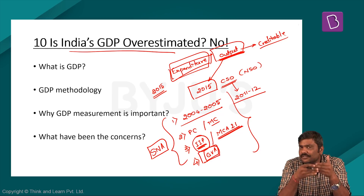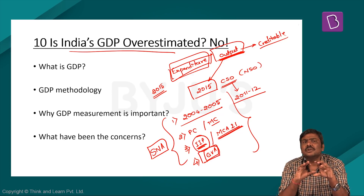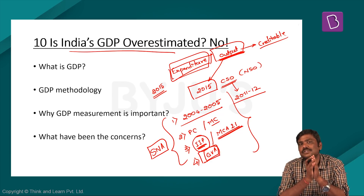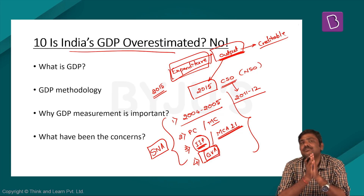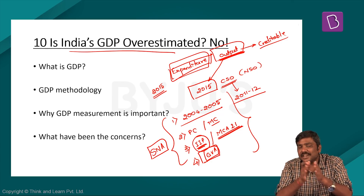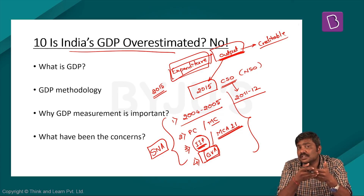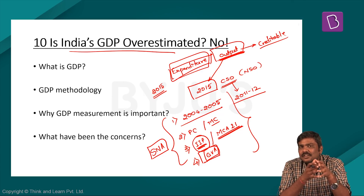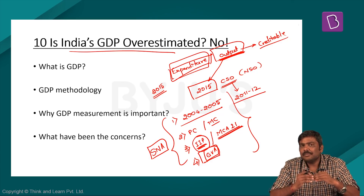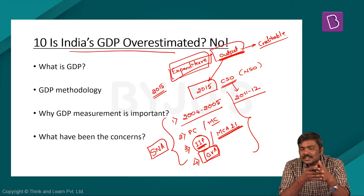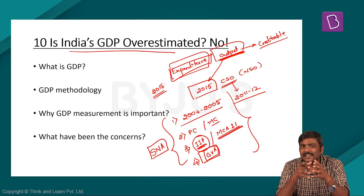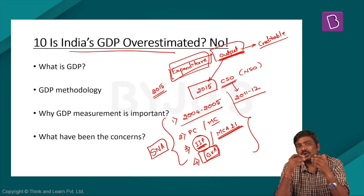Very recently, a survey conducted by NSSO regarding the number of companies covered under the MCA21 database raised certain concerns. As per the NSSO survey, around one-third of the companies in this database have become a cause of concern. Last year, NSSO raised concerns about companies considered in GDP calculation under the MCA21 database, stating that these companies either are not functioning or have closed down. Hence, there is an overestimation of GDP.